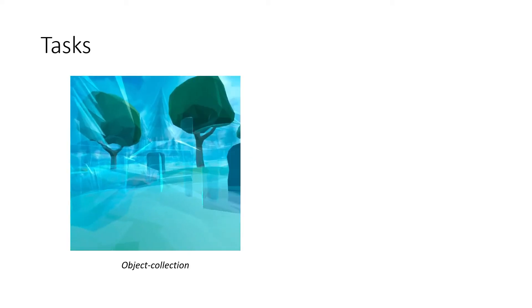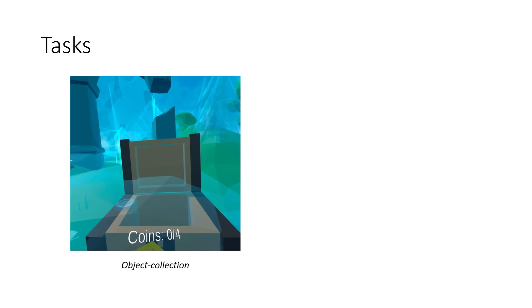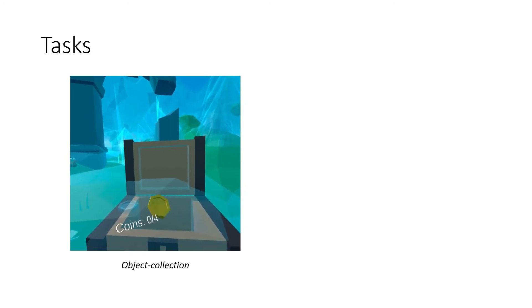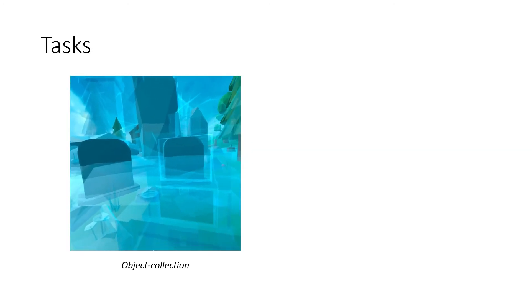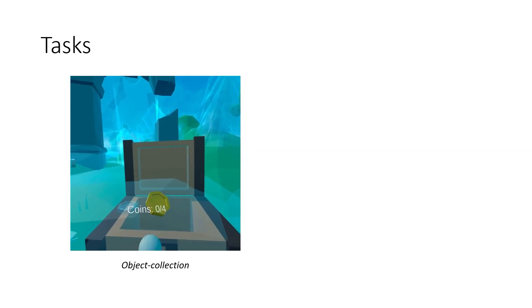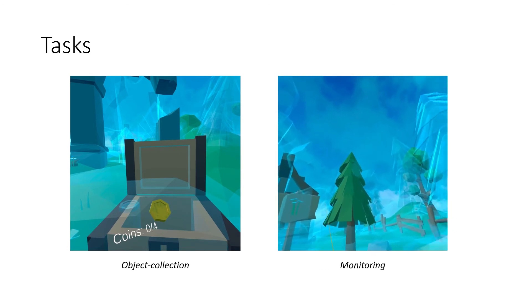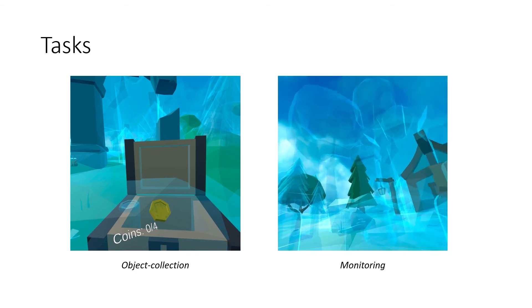In the object collection task, participants were tasked with multiple rounds of finding a number of coins spread across the four locations and then placing them in a chest at one of the locations. In the monitoring task, participants had to locate a floating disk at one of the four locations and repeat this a number of times.